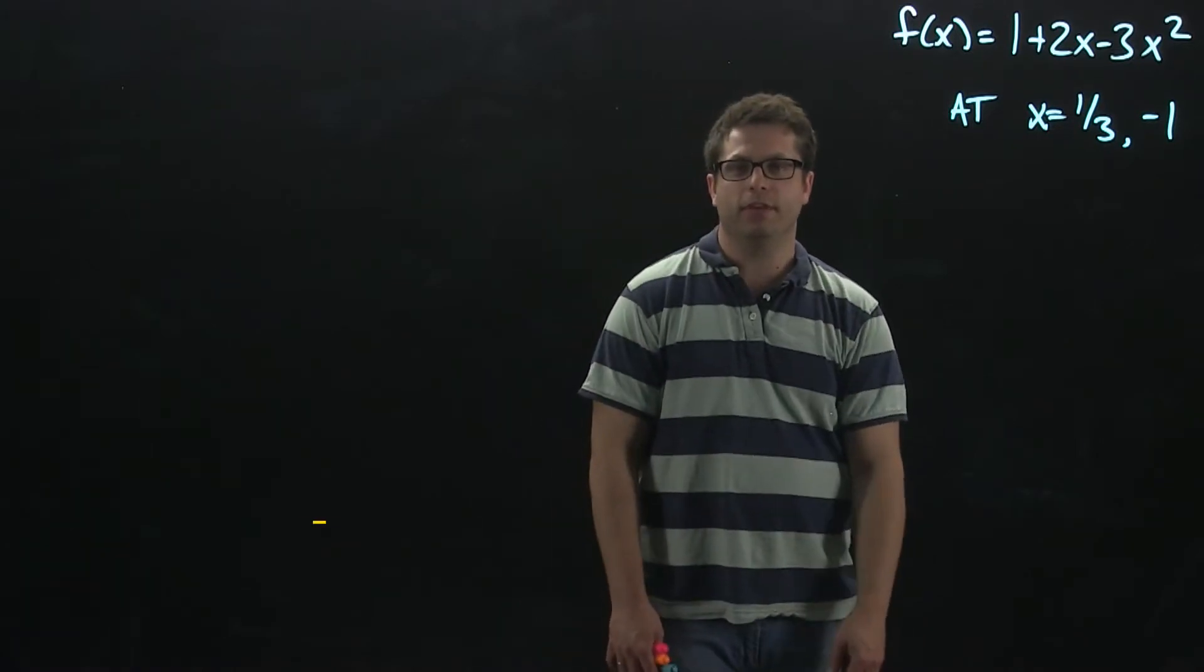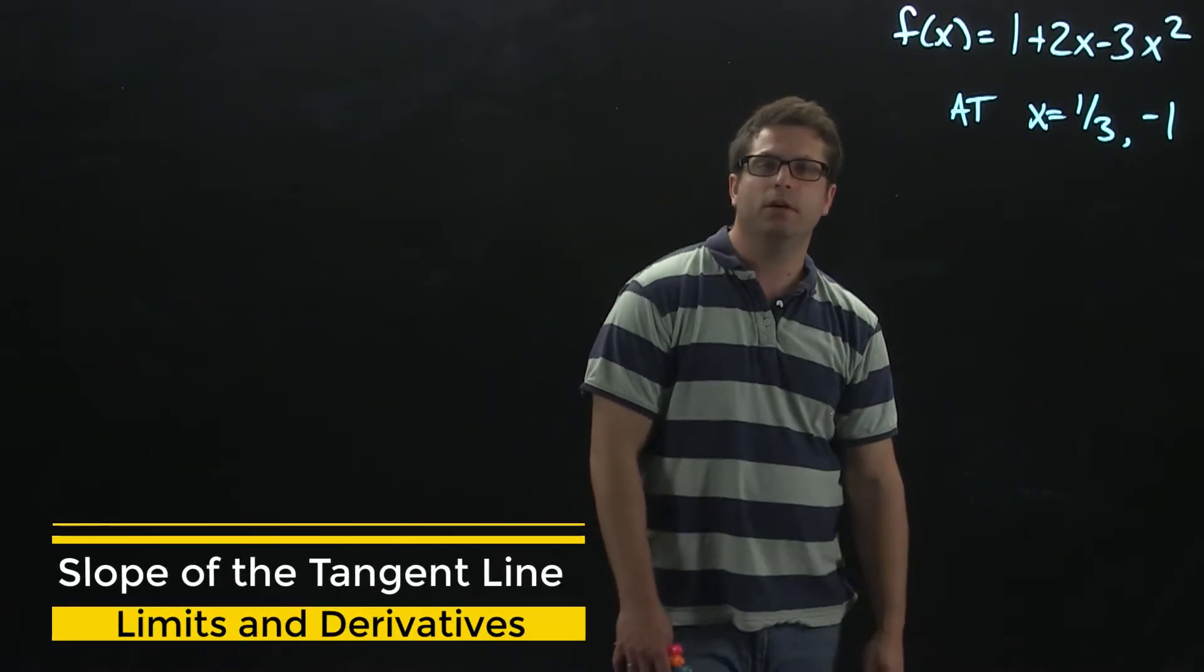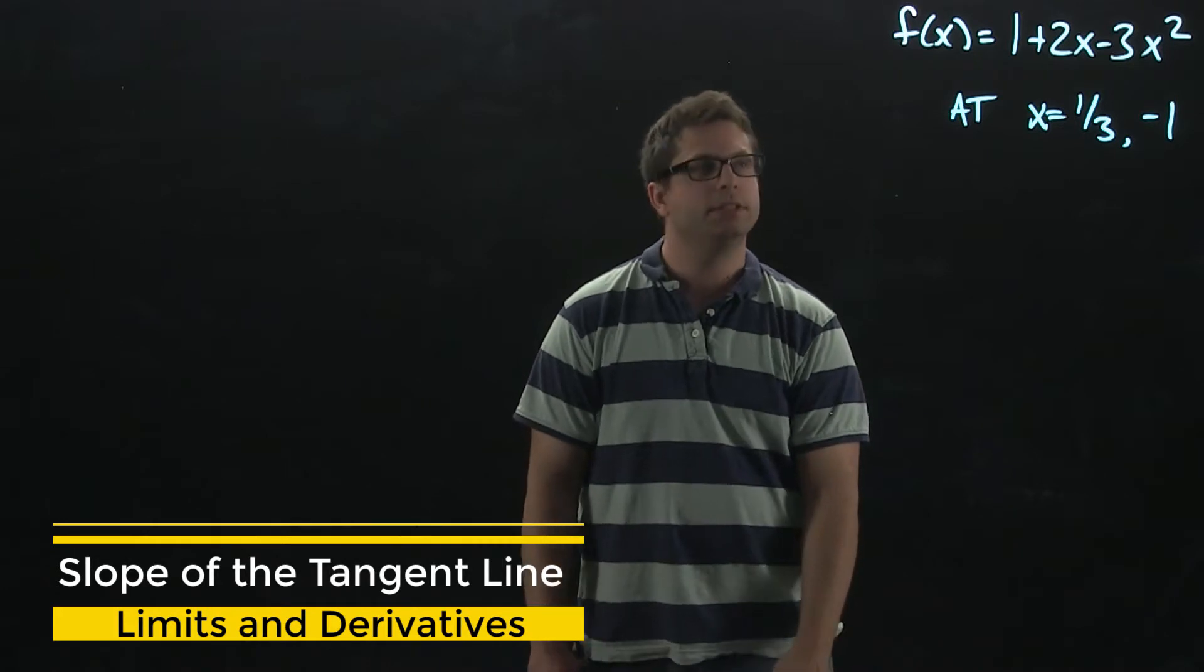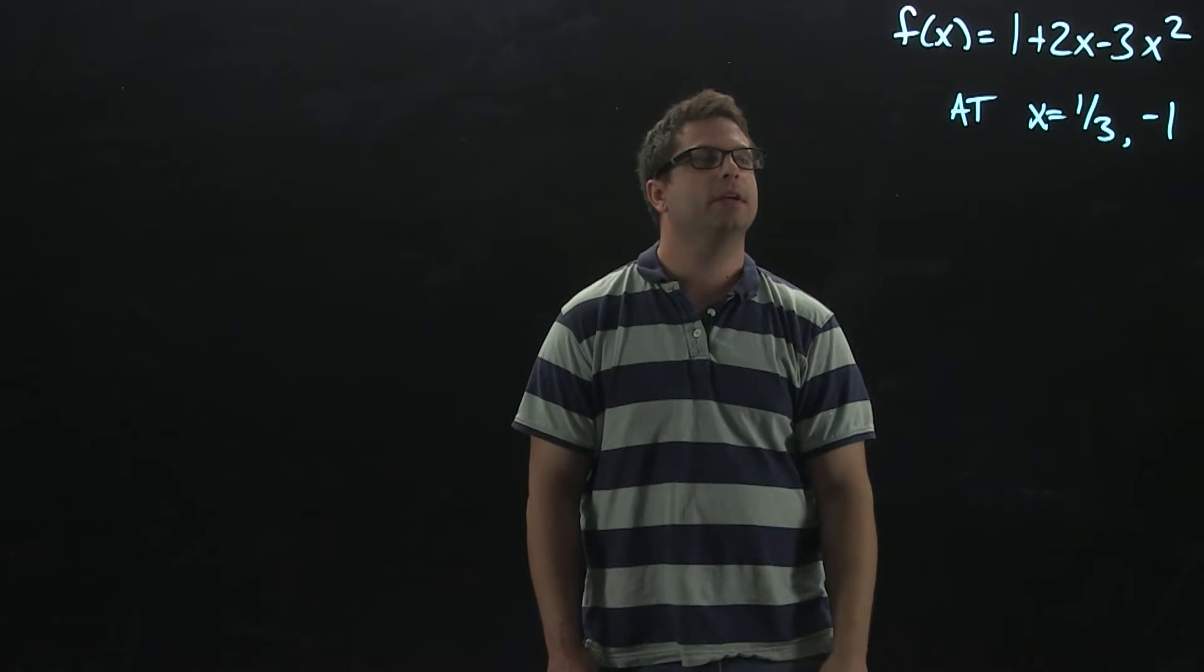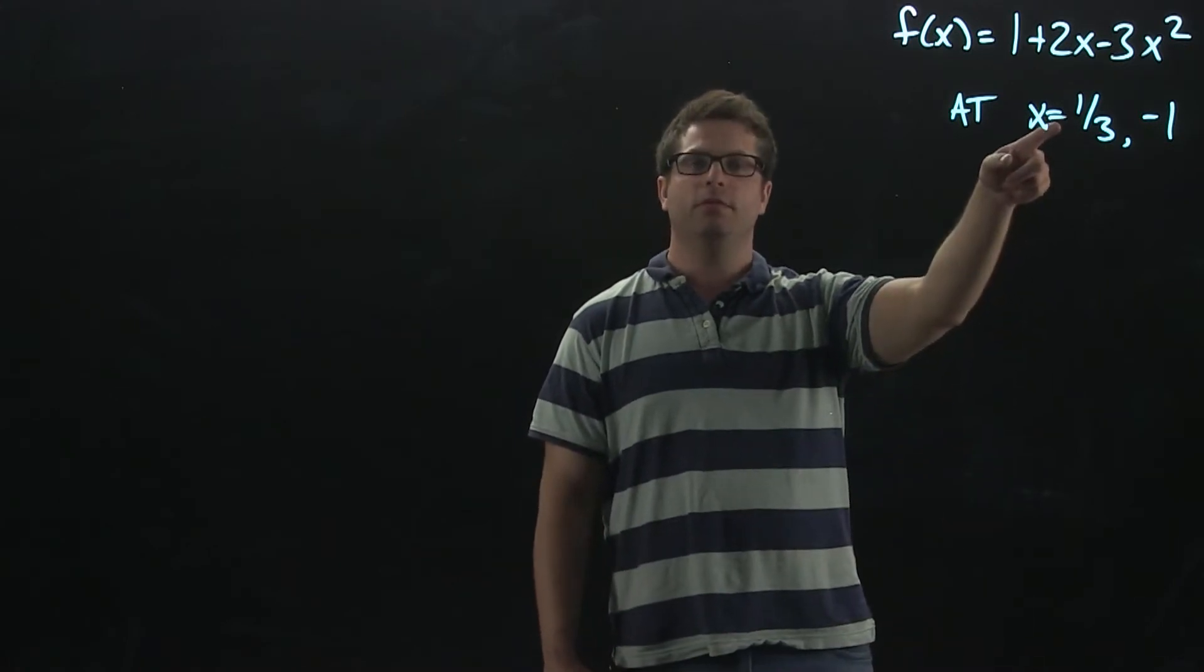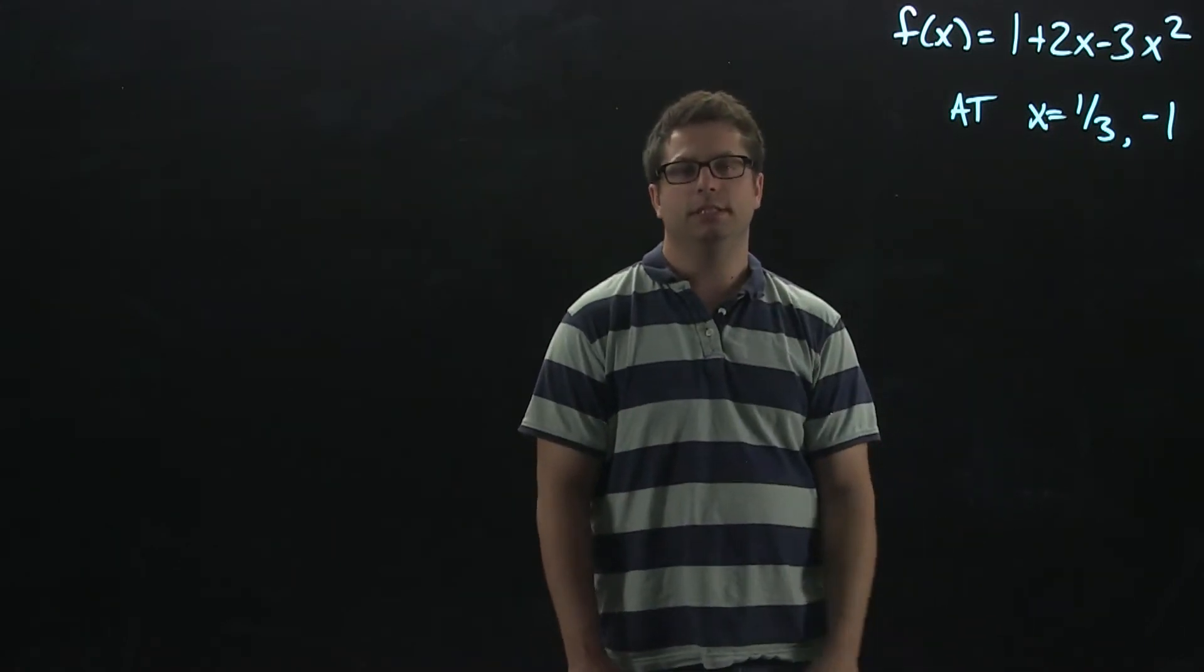Hi, my name is Brian. Welcome to another video on derivatives. In this video we are going to find the slopes of the tangent lines on this function 1 plus 2x minus 3x squared at x value of 1/3 and at x equals negative 1.